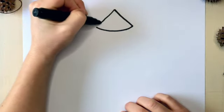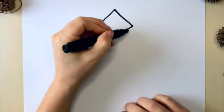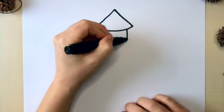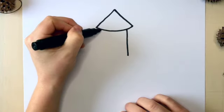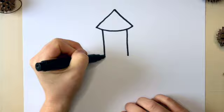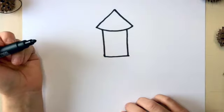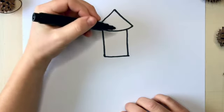And then you're going to draw two lines and connect them similar to a rectangle. Perfect. Now we're going to put some decoration on our rocket.